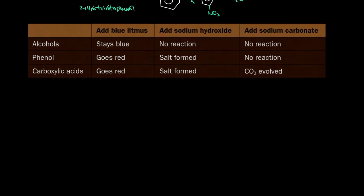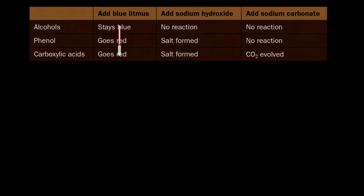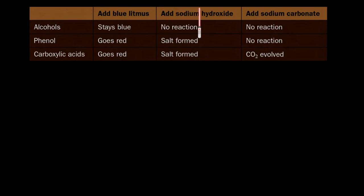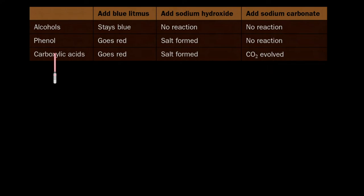To distinguish between carboxylic acids, phenols, and alcohols: add blue litmus — alcohols are not acidic so won't turn it red, whereas phenols and carboxylic acids will. Add sodium hydroxide — only acids form a salt, so alcohols won't react. Add sodium carbonate — phenols are not strong enough acids to react, but carboxylic acids are, producing bubbles of colorless gas. To distinguish phenol from carboxylic acid, use sodium carbonate. To distinguish alcohols from acids, use blue litmus or sodium hydroxide.